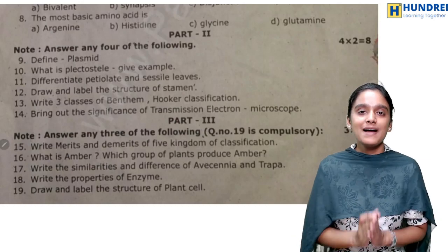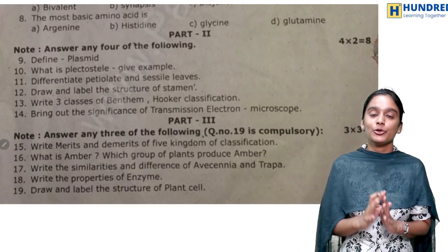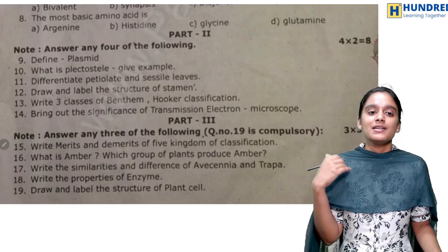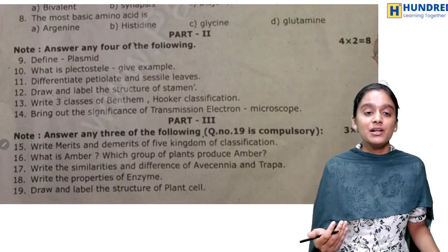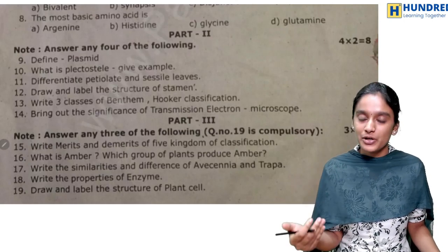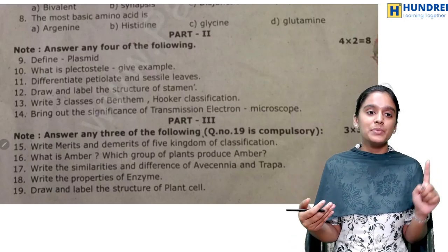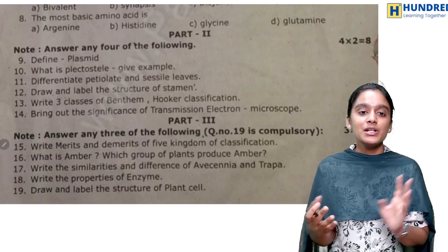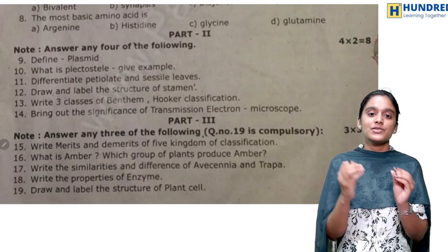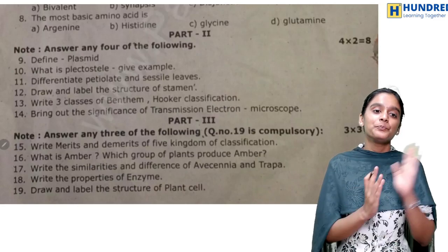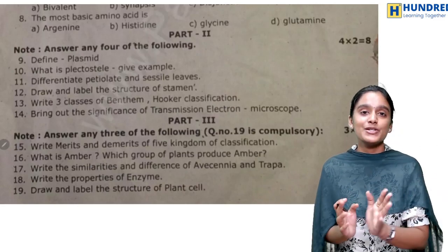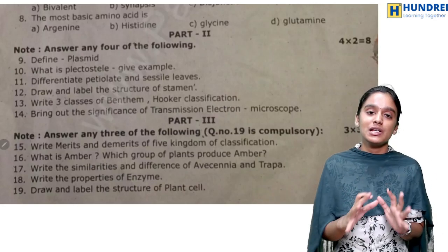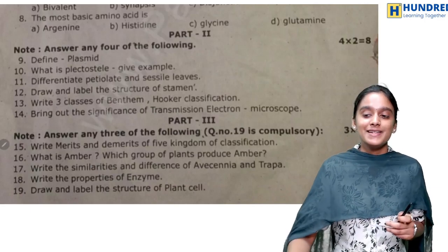You have to label and draw — that is the compulsory question. Next, the merits and demerits of five kingdom classification from your first chapter. What is amber — second chapter. Differences and similarities of whisk ferns, and next, properties of enzymes from the biomolecules chapter.